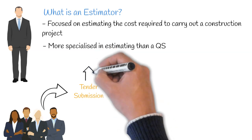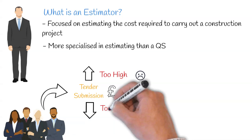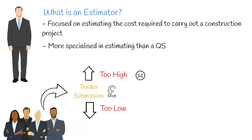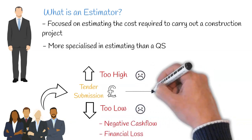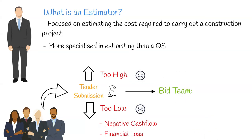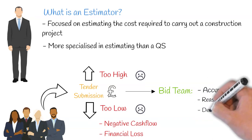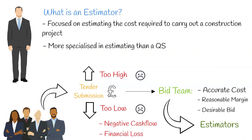This is an extremely important task, as if the price is too high they may miss out on a lucrative opportunity, and if the price is too low they may have just won themselves a project which is going to have devastating financial implications, resulting in a negative cash flow and an overall financial loss. It's for this reason construction companies will often employ a bid team with the primary focus of determining what the project will cost, including a reasonable margin, formulating a desirable bid for the client. The bid team will contain estimators who use their skills and expertise to help formalize the financial element of the bid package.